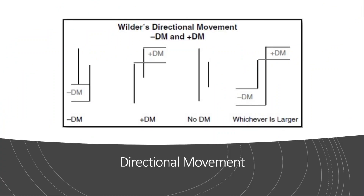How are DM plus and DM minus computed? If today's candle low is lower than yesterday's candle low, that difference is attributed to DM minus. If today's high is greater than yesterday's candle high, the difference of the two highs is attributed to DM plus. If today's candle is within the range of yesterday's candle, there is no DM value. If today's candle is outside yesterday's range, we compute both DM minus and DM plus and take only the larger number.